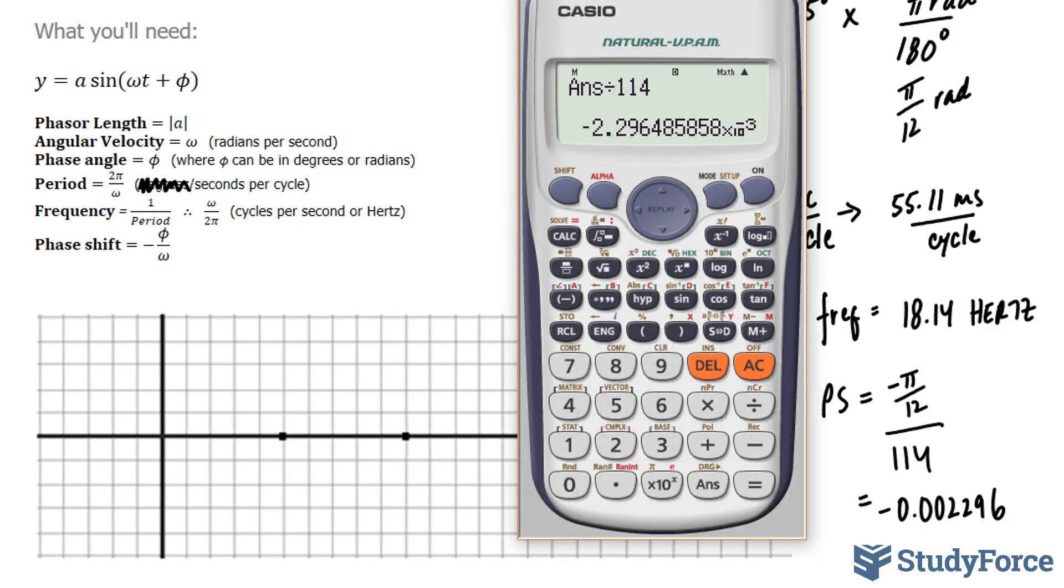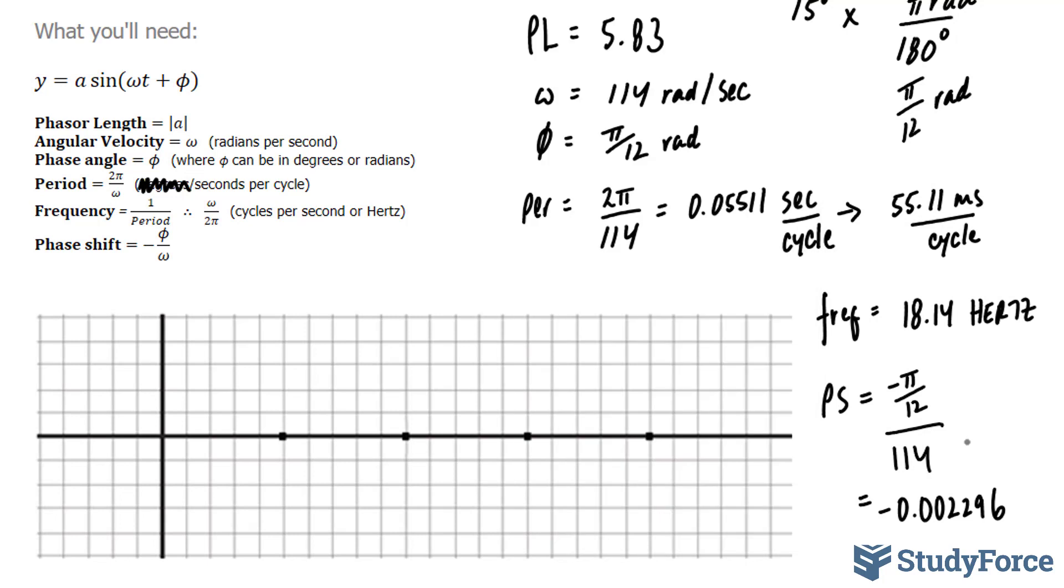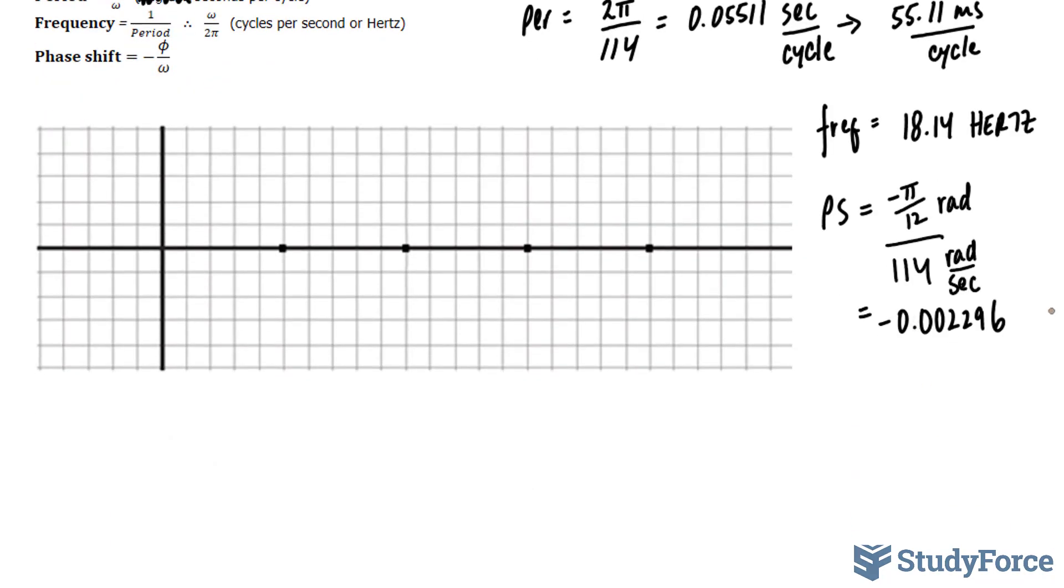Now, what is the unit for phase shift? Remember, this one is in radians, and this one was in radians per second. That means the units for this are simply in seconds.